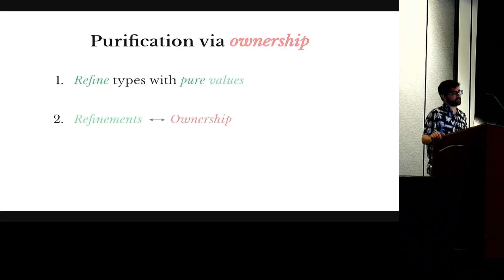So the rest of the talk is going to be very simple. First I'm going to tell you how we extend the Rust type system with refinements. And then I'm going to tell you how these refinements interact with ownership in a way that allow us to verify imperative code.